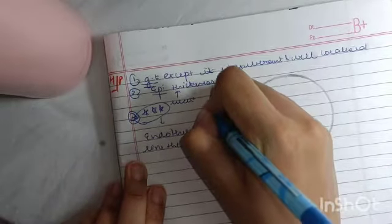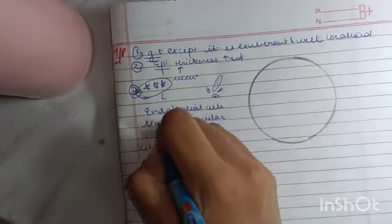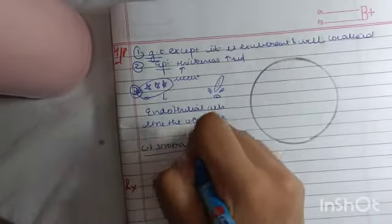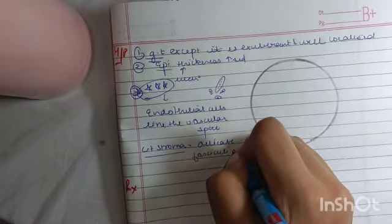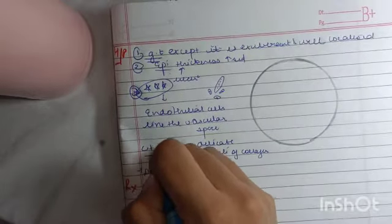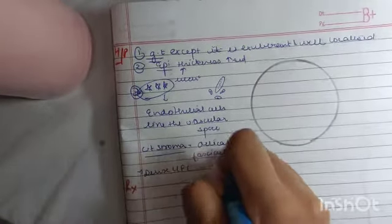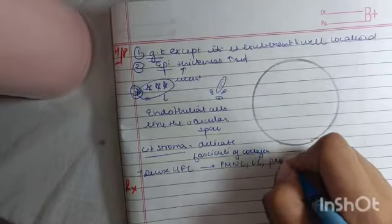Now the connective tissue stroma is very delicate. It has fasciculi of collagen and one very important point to mention is the dense chronic inflammatory cell infiltrate that is mainly of PMNs and lymphocytes and the plasma cells. The amount of them being present will depend upon the degree of ulceration.